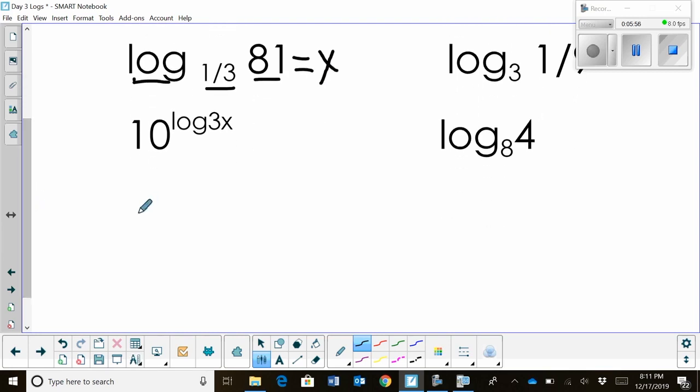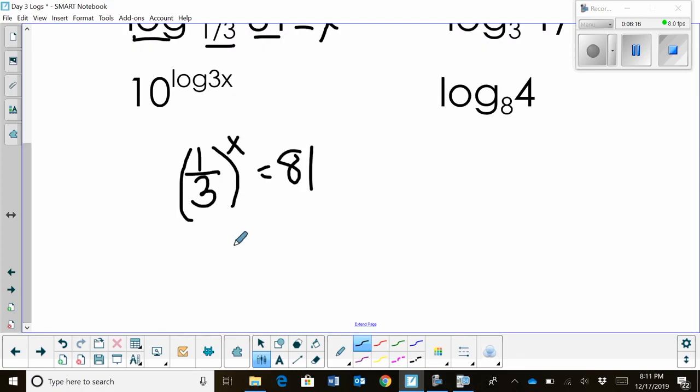And let's rewrite that as, I'm sorry, not as a log. Let's rewrite it as an exponential. 1/3 to the power of x, and I'm going to treat that as a full quantity, is equal to 81. Now, 1/3 is a little tricky, but I think I could write it with a base 3. Because if I want the reciprocal of that, I just raise that to a negative 1.